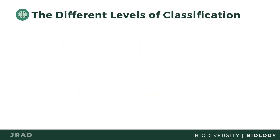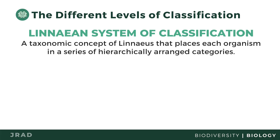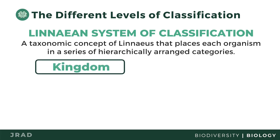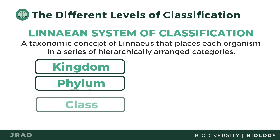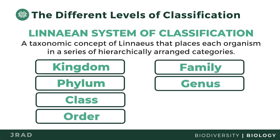To further understand how organisms behave and interact with their surroundings, a standardized model of identification and classification is needed. A taxonomic concept by Carlos von Linnaeus places each organism in a series of hierarchically arranged categories. The taxonomic ranks are arranged as kingdoms, phylum, class, order, family, genus, and species.